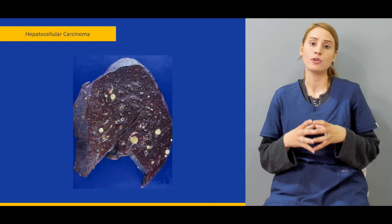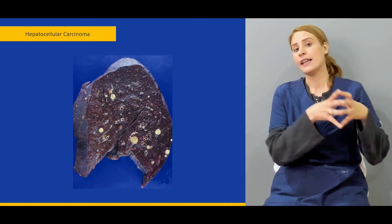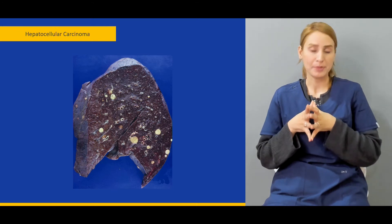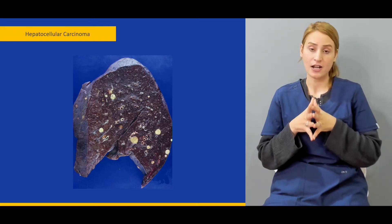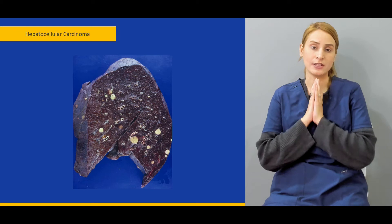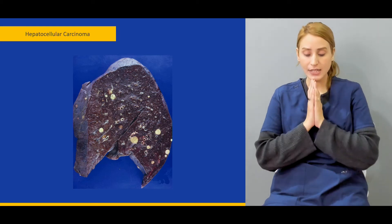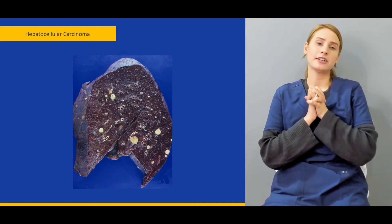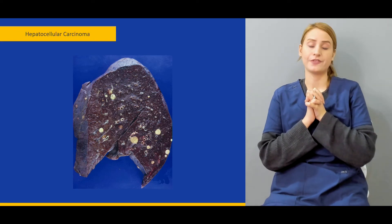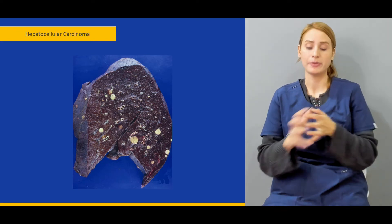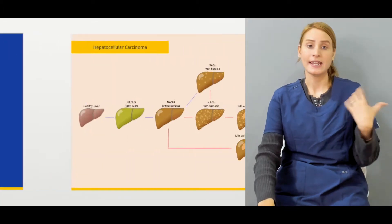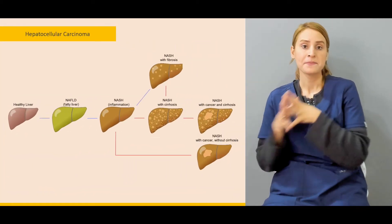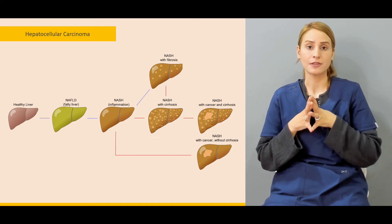We'll be talking about the role of cirrhosis, autoimmune hepatitis, and hepatitis B and C infections which are related to the development of hepatocellular carcinoma. Then we'll be talking about the role of chronic primary biliary cirrhosis and other chronic conditions which can actually lead to full-blown hepatocellular carcinoma.